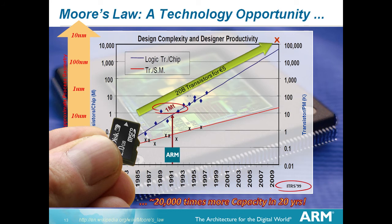Moore's Law is a technology opportunity. I use the International Technology Roadmap for Silicon, vintage 1999. There are two curves: one is the number of transistors going up per device. When ARM was started back in 1991, an integrated circuit had around a million transistors. Today we're looking at 20 billion transistors on an integrated circuit which you buy for around three pounds — that's 20,000 times more capacity in 20 years.